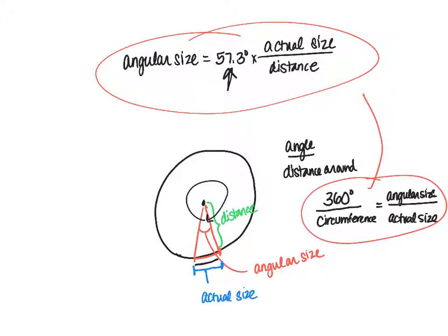The circumference of a circle is 2πr. Now r is the radius, and in our picture the radius actually corresponds to the distance.